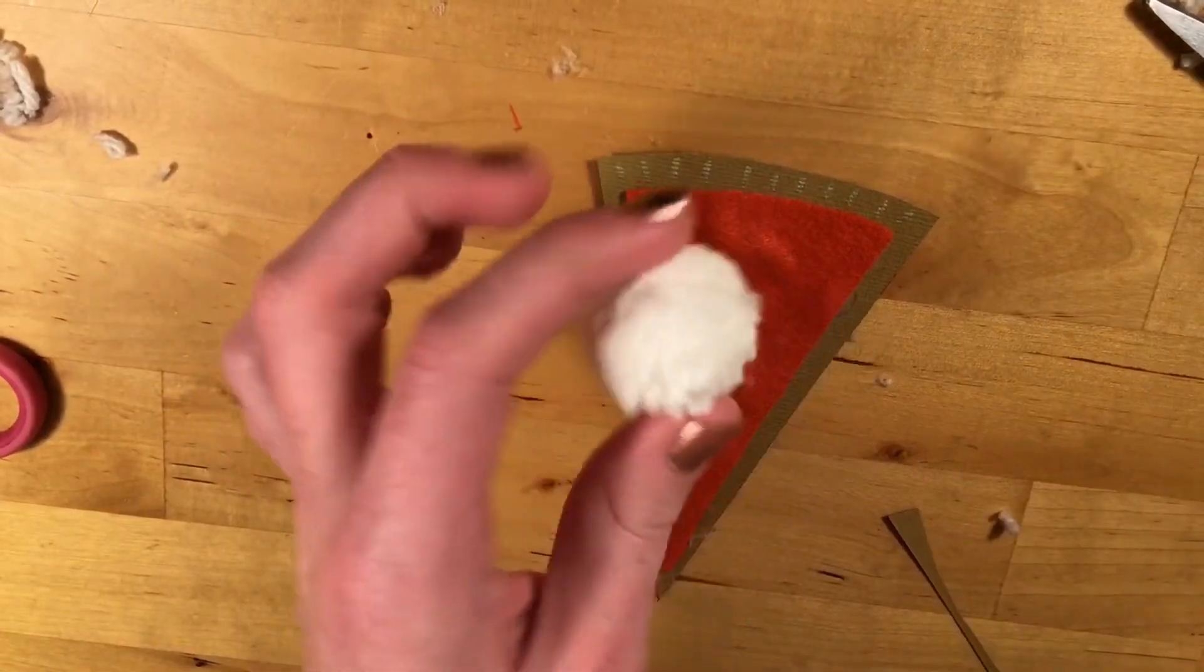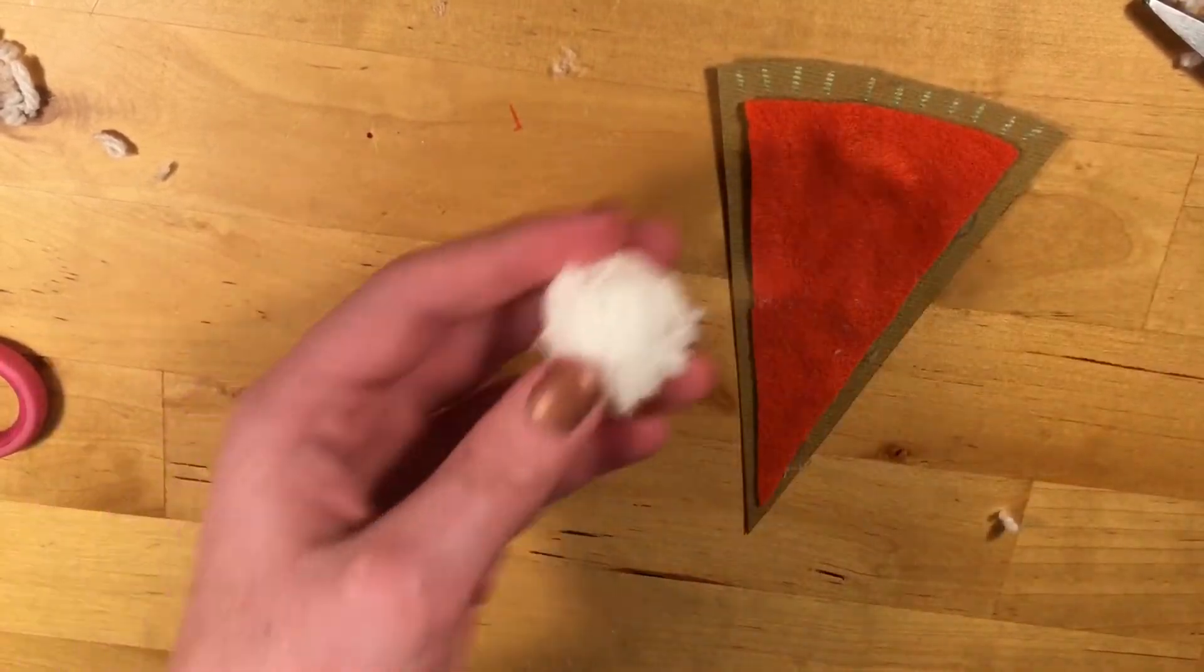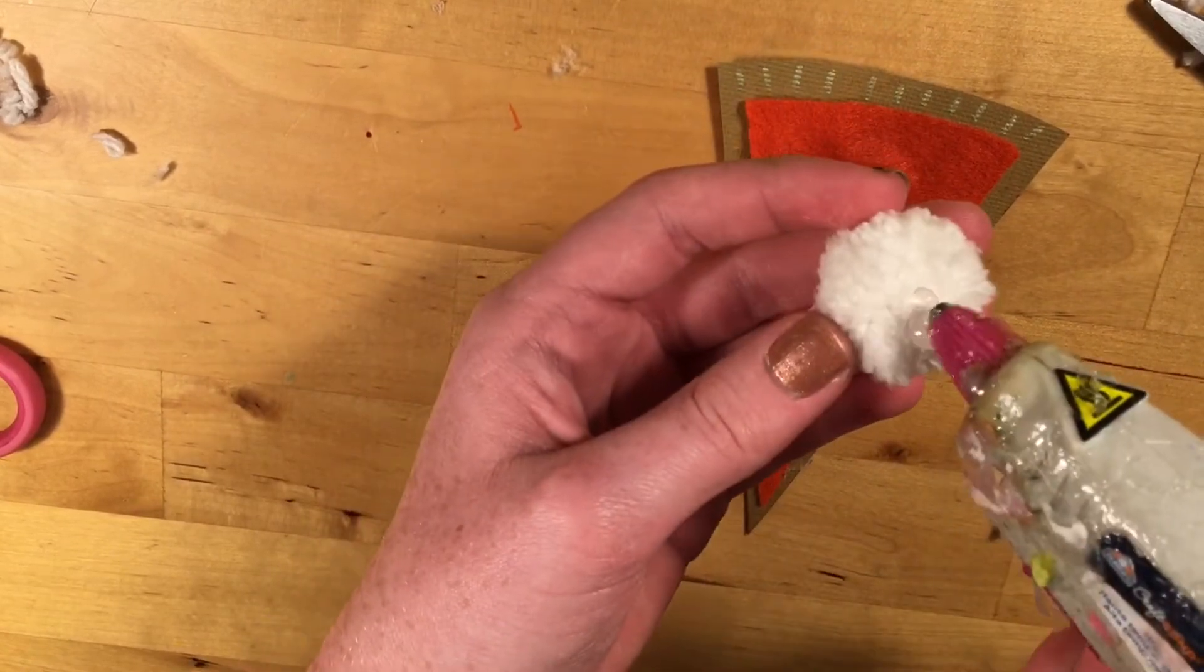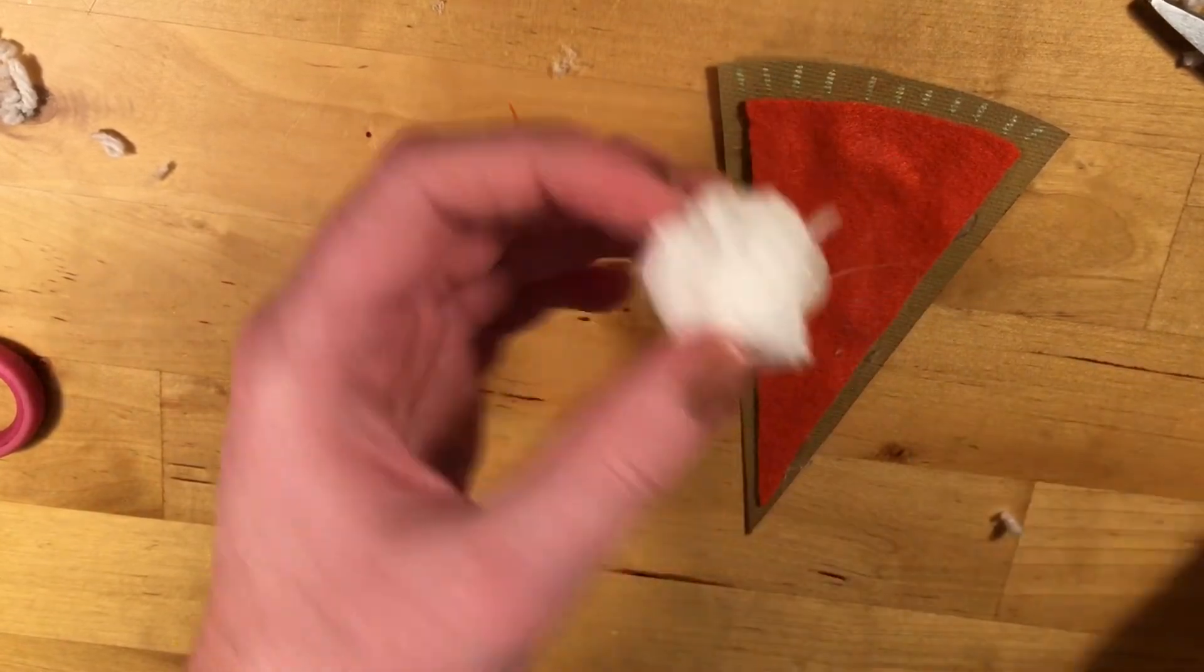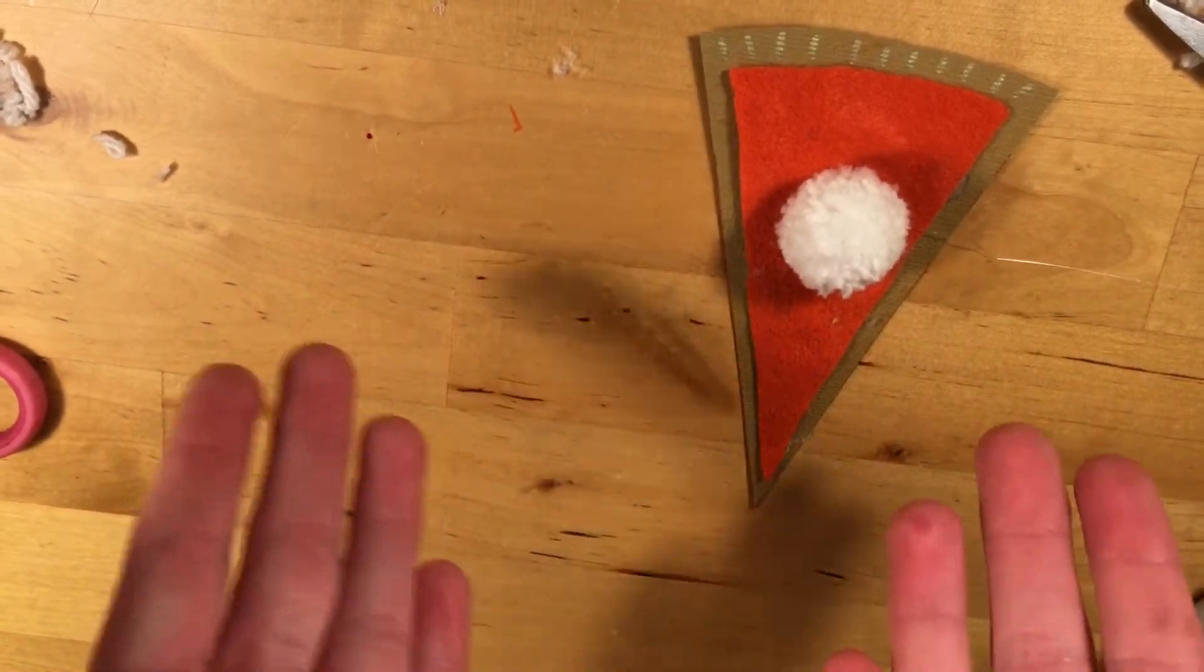Okay, so now that we've made this little pom-pom, I'm just... Oh, a little bit of fuzzy got on the pie. It's okay. So now that we've got our pom-pom, I'm just going to put a little dollop of glue on the back and glue it on my pie. And there's your finished pie.